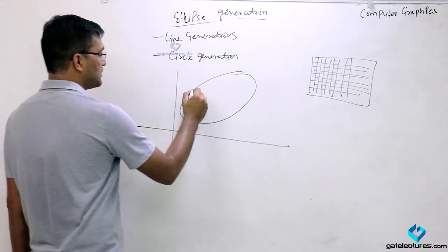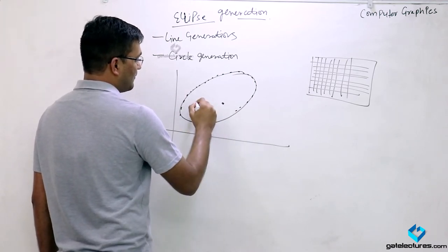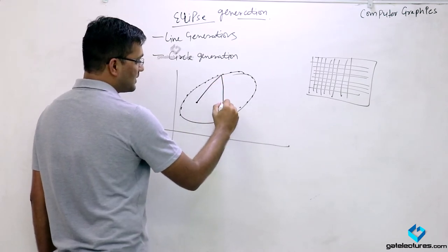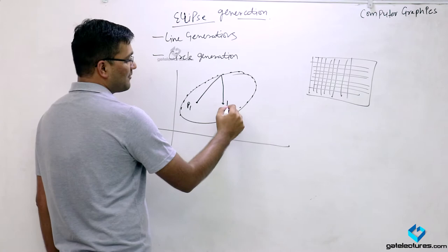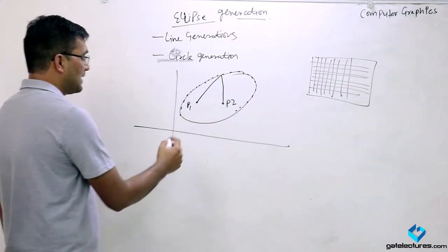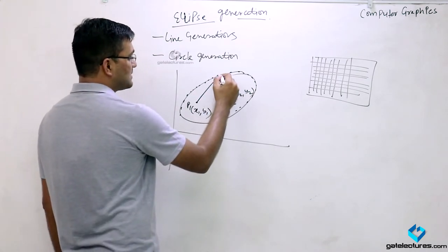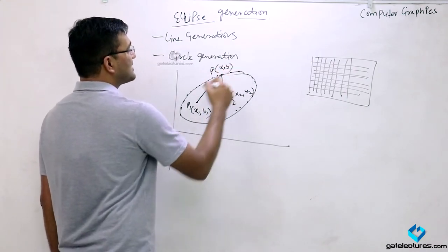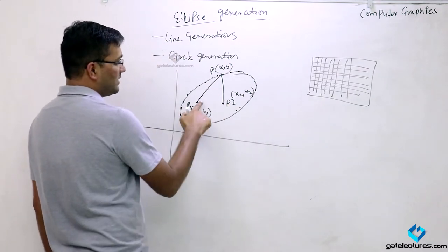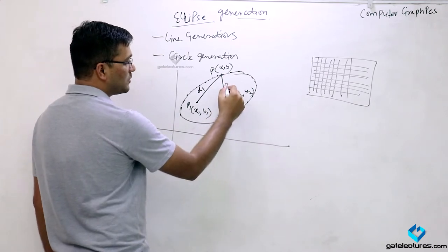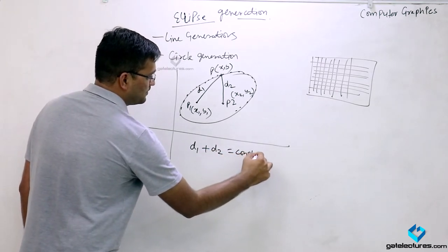Basically, an ellipse is a set of points in which each point has an equal combined distance from two fixed points. If I have a point P1 and a point P2 anywhere within the boundary of the ellipse — say P1 at x1, y1 and P2 at x2, y2 — and a point P at coordinates x, y on the boundary of the ellipse, then the distance between P1 and P is D1, and the distance between P and P2 is D2. That means D1 plus D2 is equal to a constant.